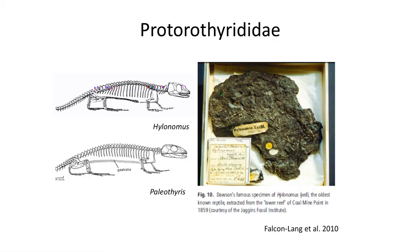As defined, the anapsid group is a paraphyletic grouping of early reptiles since it does not include the descendants such as synapsids and diapsid reptiles. We can see the lack of a temporal fenestra in the two oldest amniote reptiles from the Pennsylvanian of Nova Scotia, the fossils Hylonomus and Paleothyris. Each lacks any openings in the side of the skull near the squamosal bones and features a primitive reptile skeleton.